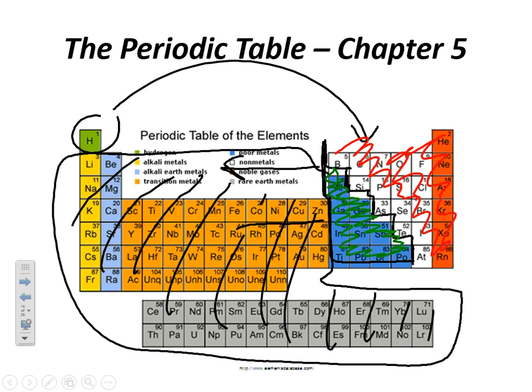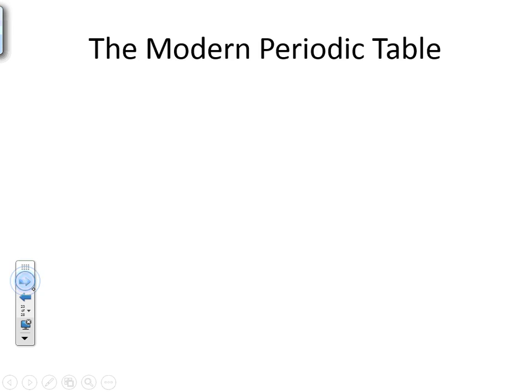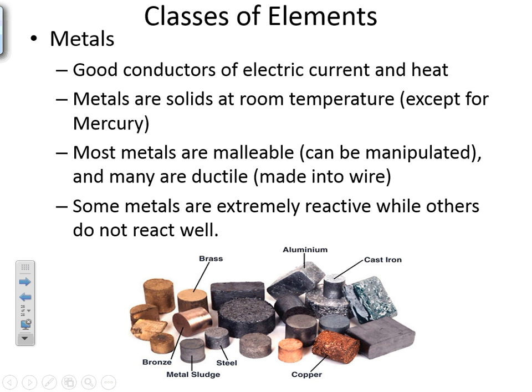We're going to talk about those three categories today: to the left of the steps, to the right of the steps, and underneath the steps. We're going to classify everything to the left of the steps as the metals. Any element to the left of the steps is a metal.